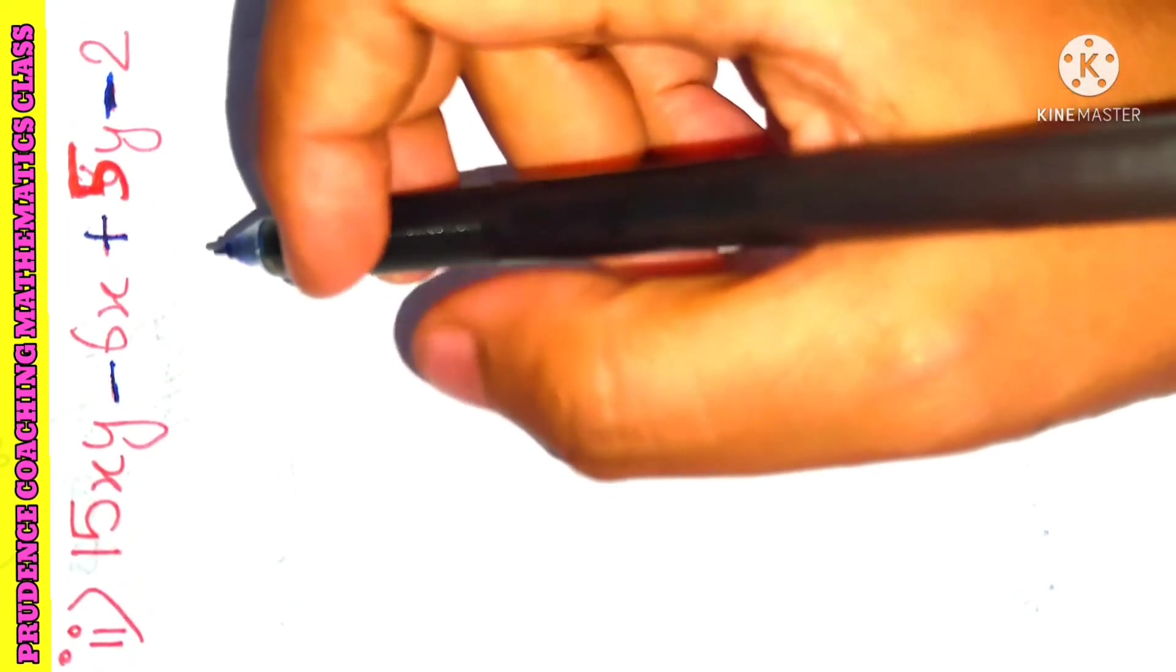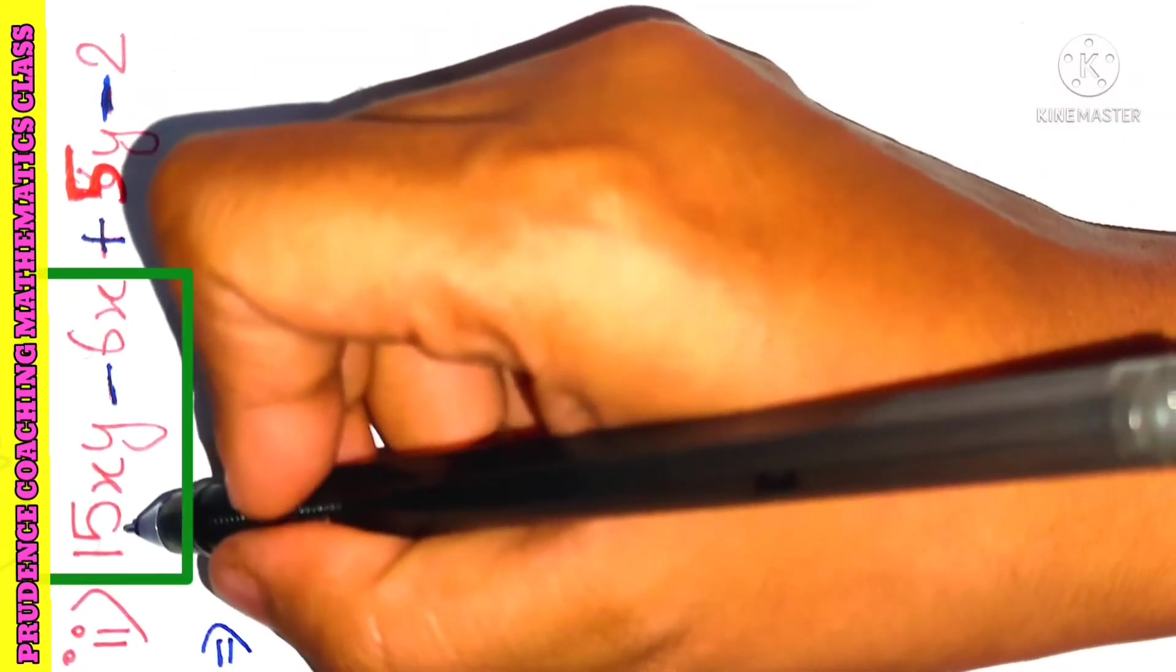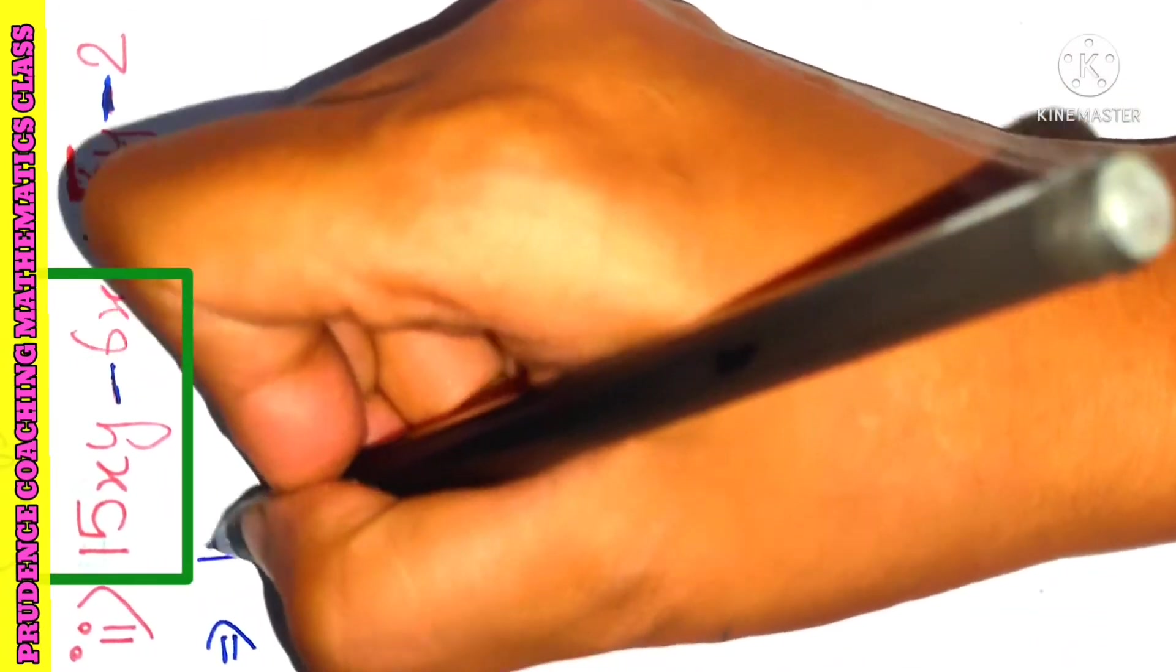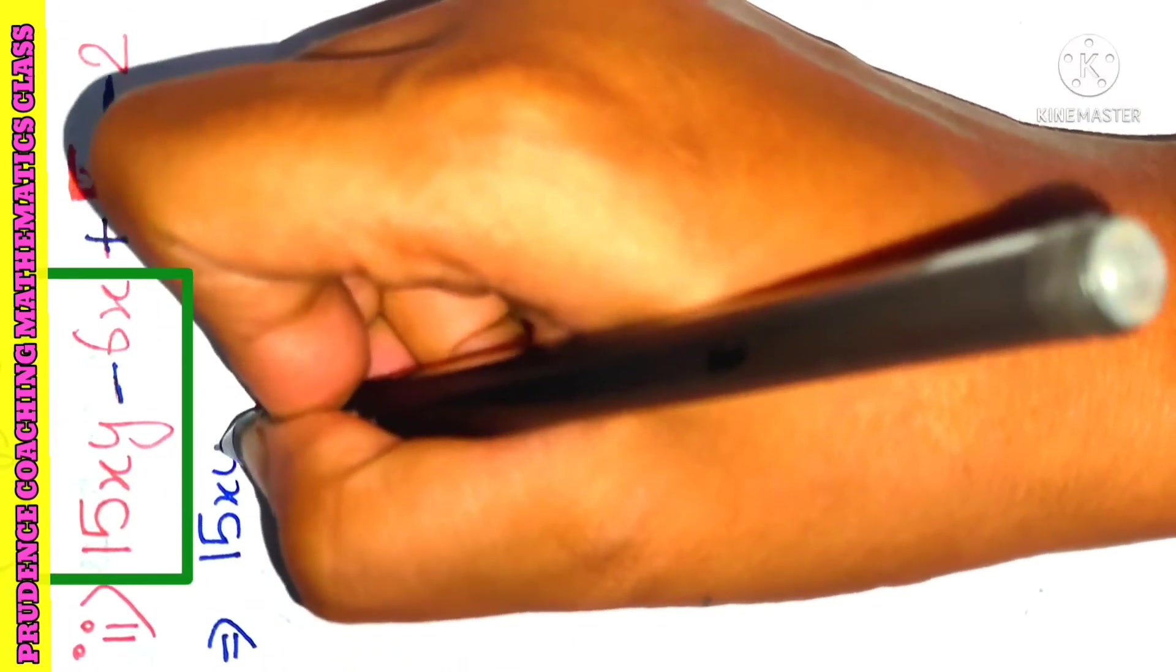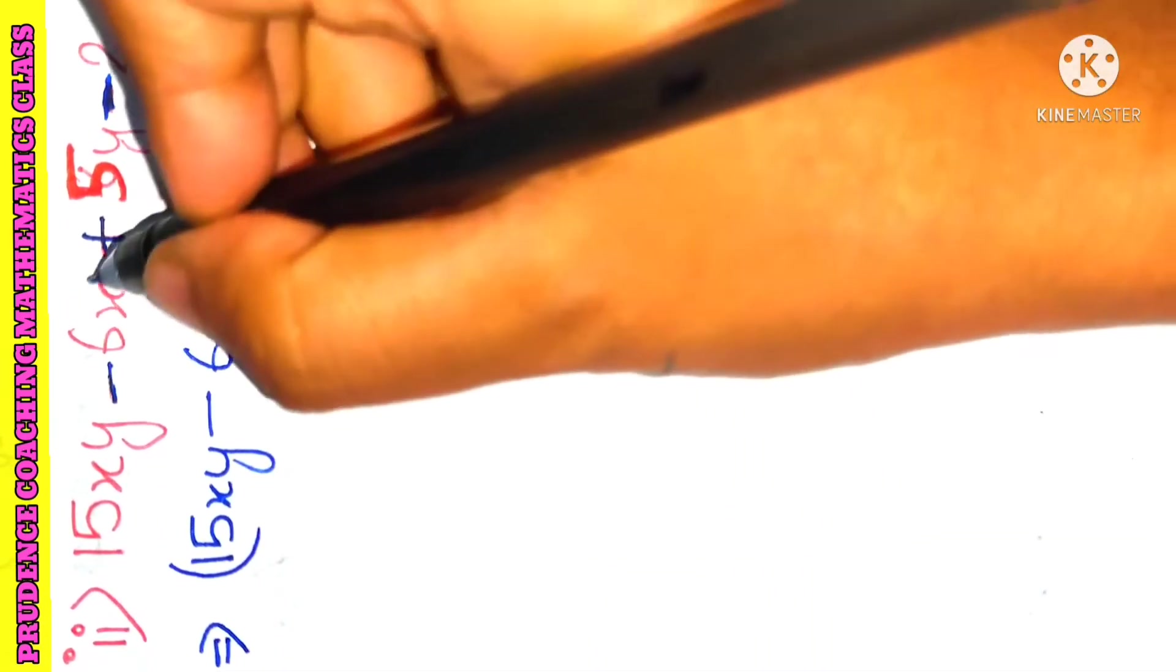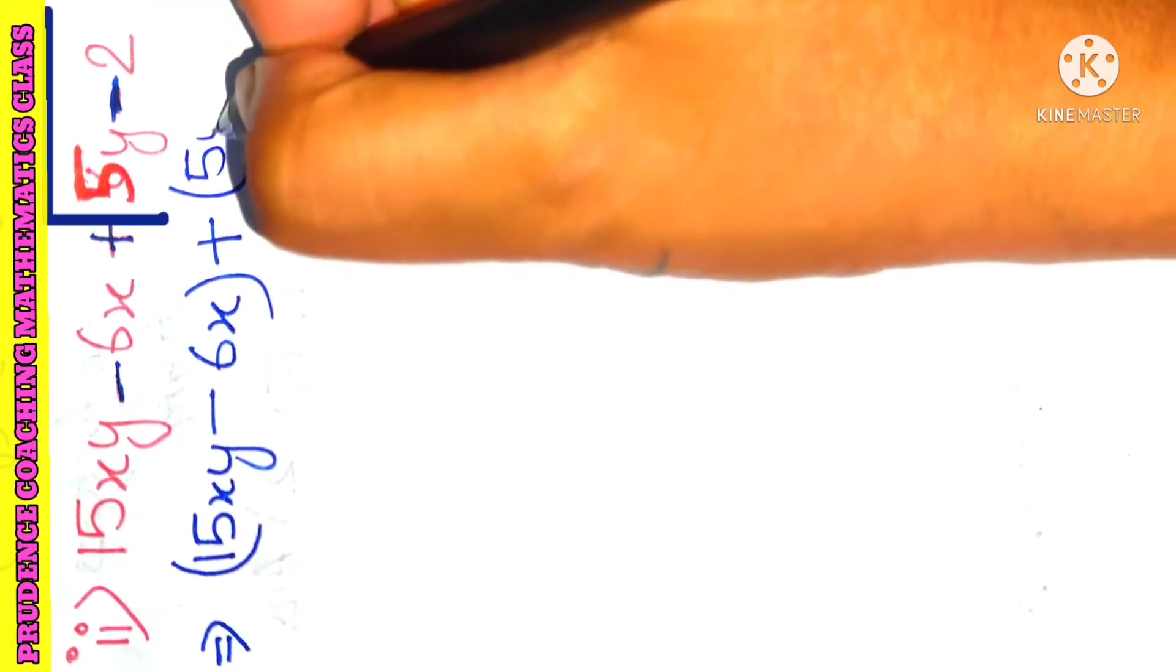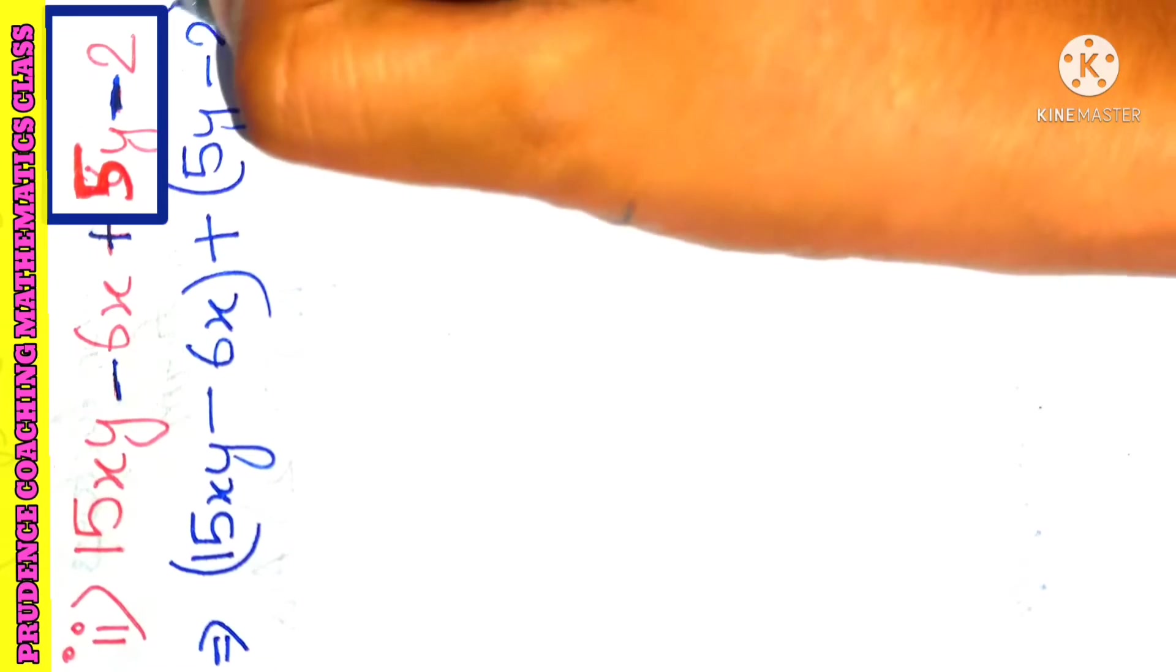Now what we need to do is take two pair of terms together. So we will take this one and this one together. We will write 15xy. Here we have minus, so minus 6x. This is one pair, and we will put a plus here and write 5y minus 2 as another pair.